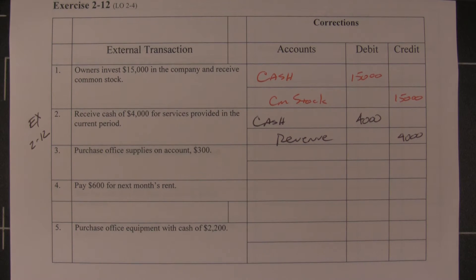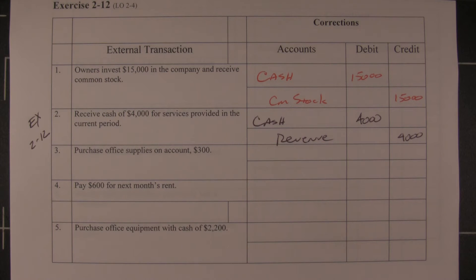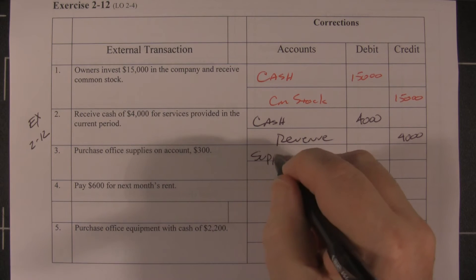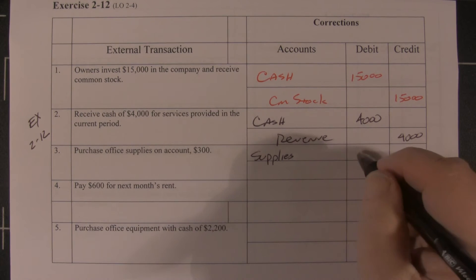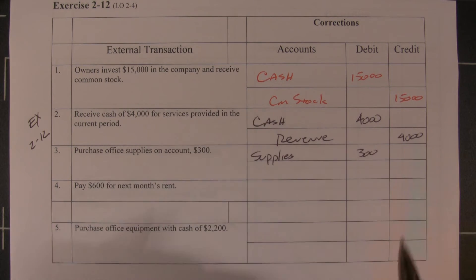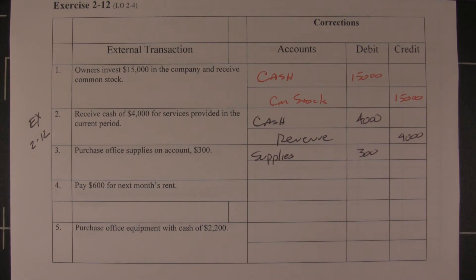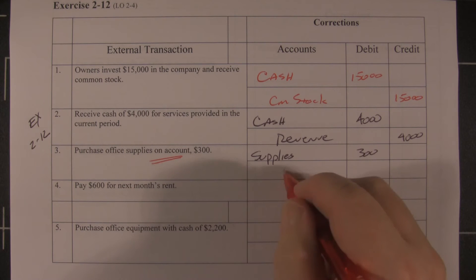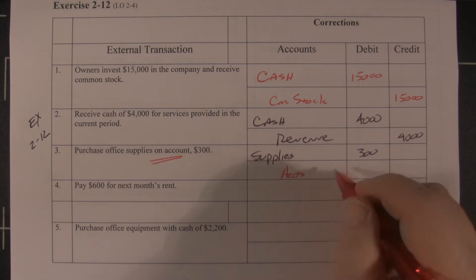Next, we purchased supplies on account for $300. He got this half right — supplies are an asset for $300 — but he said we paid cash for them. It clearly says on account, so that would be accounts payable for $300.